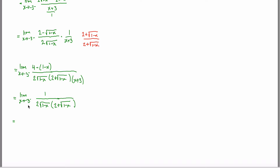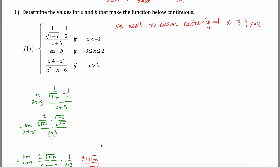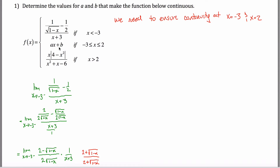Now I can evaluate by substituting x = -3: I get 1 divided by 2 times √(1−(−3)) times (2 + √(1−(−3))), which is 1 over 2·√4·(2+√4) = 1 over 2·2·(2+2) = 1 over 4·4 = 1/16. That was pretty hard and we're nowhere near done. I'll need the function to have height 1/16 at x = -3, but I'll put that on hold.